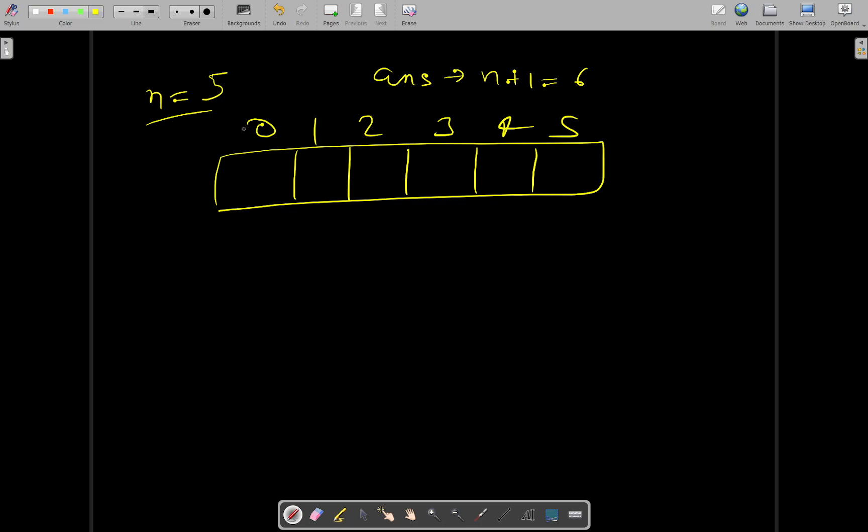So these indices will represent the numbers and elements will represent the set bits in these numbers. The number of set bits we have to calculate in each of these numbers: 0, 1, 2, 3, 4, and 5.